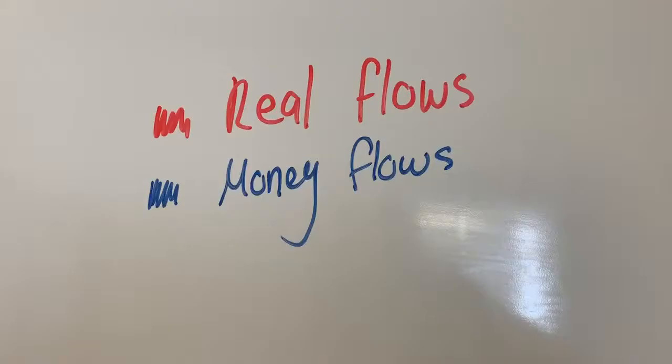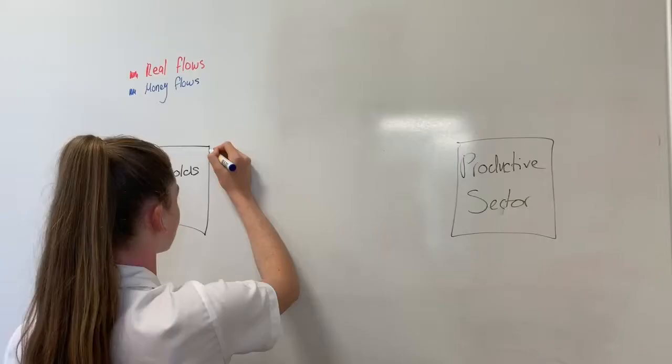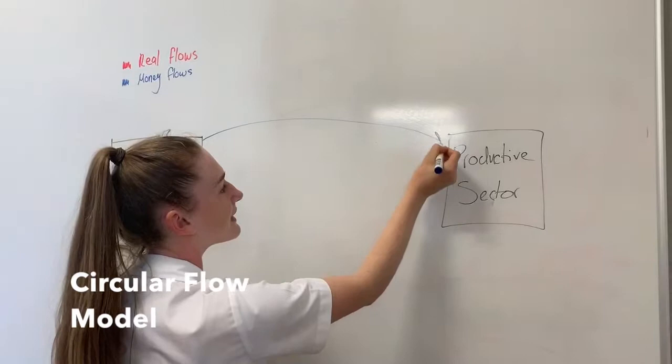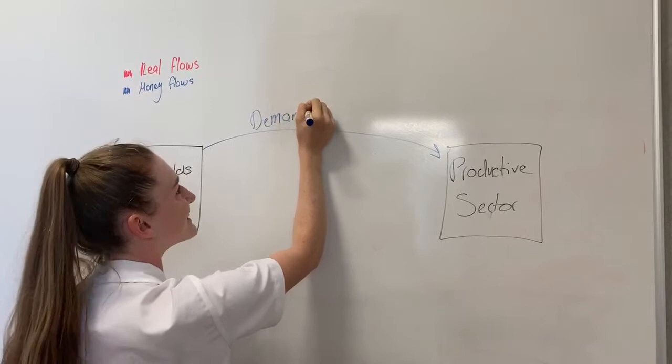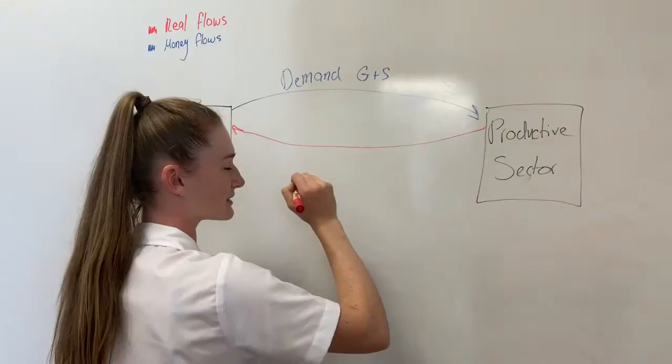In this diagram, we will be using the red whiteboard marker for the real flows and the blue whiteboard marker for the money flows. Households demand goods and services from the productive sector.